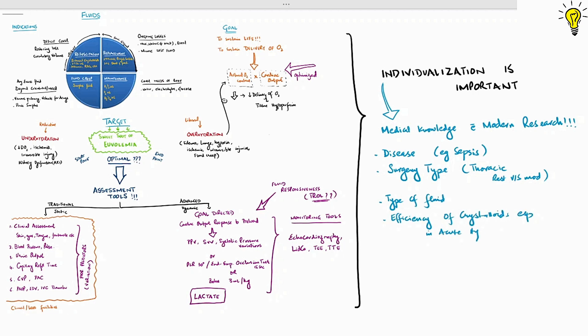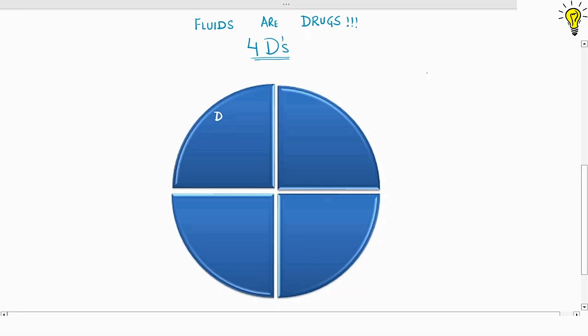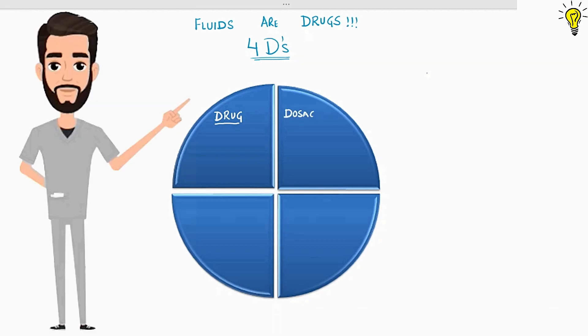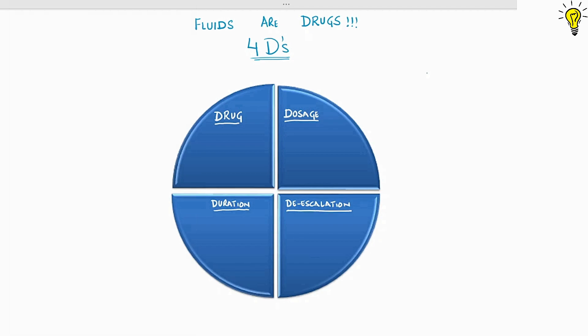Efficiency of fluids in acute hypovolemia and role of endothelial glycocalyx membrane which we covered in the first episode of this chapter. Fluids are drugs with indications, contraindications and side effects. As such, the 4 Ds of antibiotics apply to fluids as well. Drug type, duration, dosage and de-escalation.